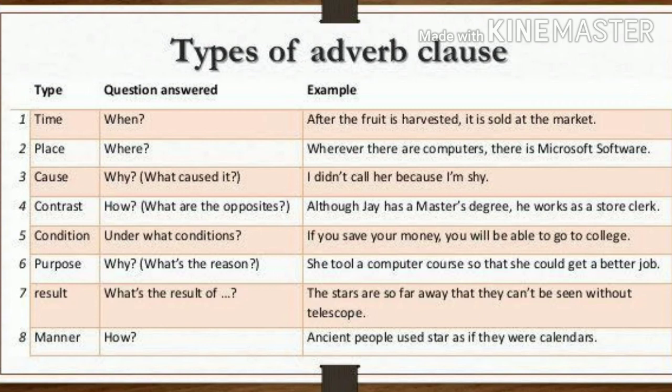4. Adverb of contrast — How? 'Although Jay has a master's degree, he works as a store clerk.' 5. Adverb of condition — Under what conditions? 'If you save your money, you will be able to go to college.'